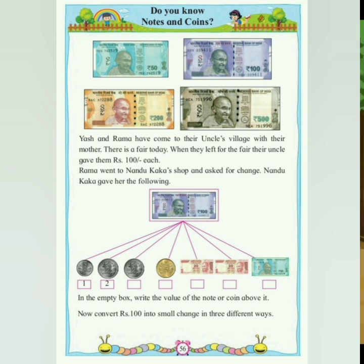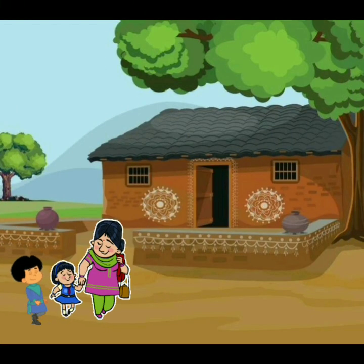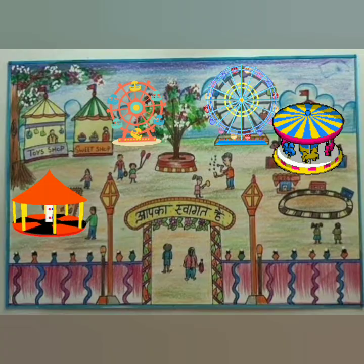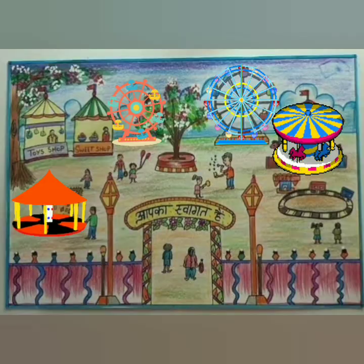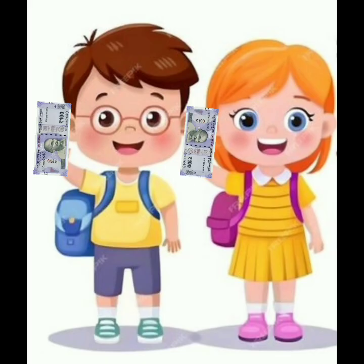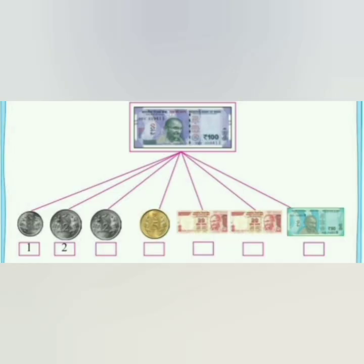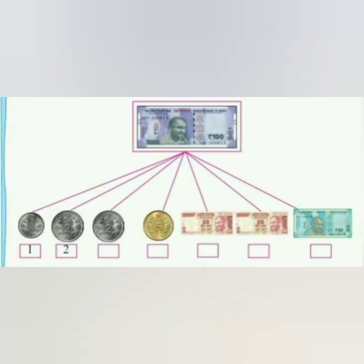So let's understand this word problem. Yasha and Rama have come to their uncle's village with their mother. There is a fair today. When they left for the fair, their uncle gave them 100 rupees each. Rama went to Nandu Kaka's shop and asked for change. Nandu Kaka gave her the following. So children, let's find out what change Nandu Kaka gave to Rama instead of Rs. 100. We will also write the value of each denomination in the box given below.